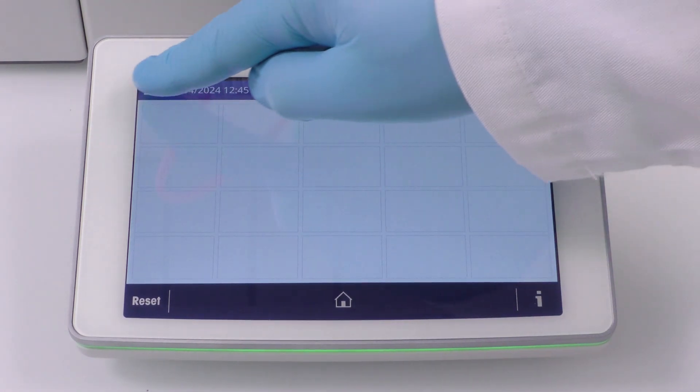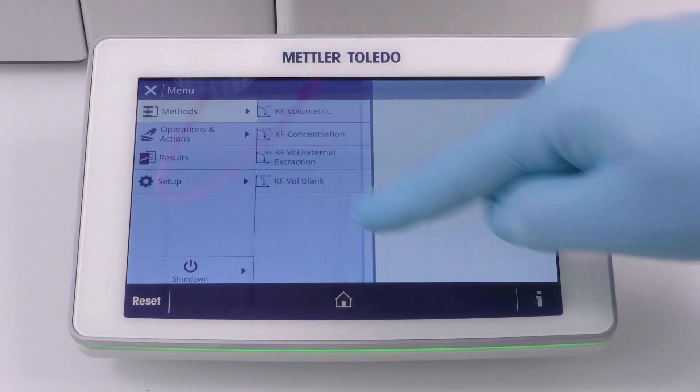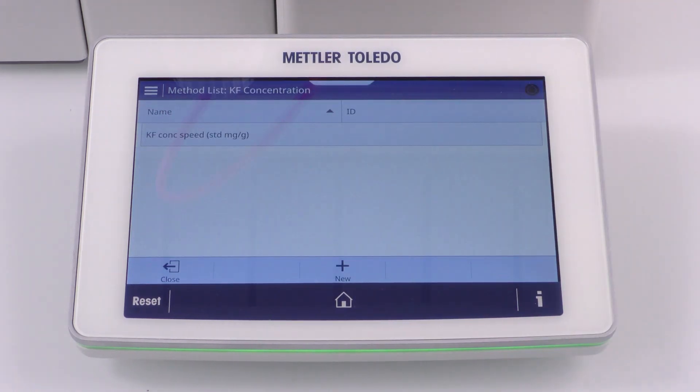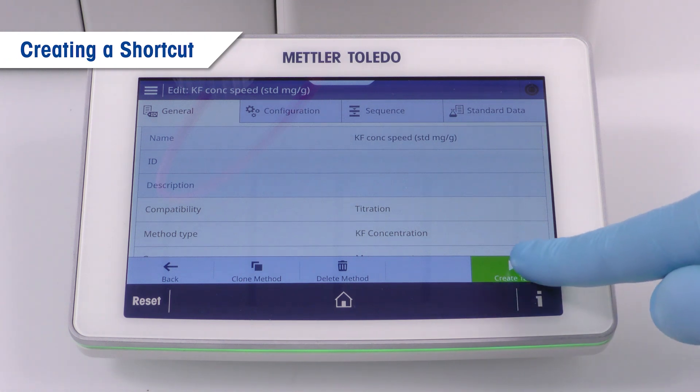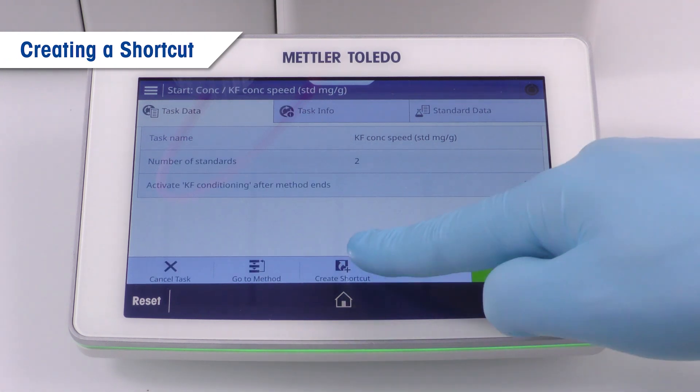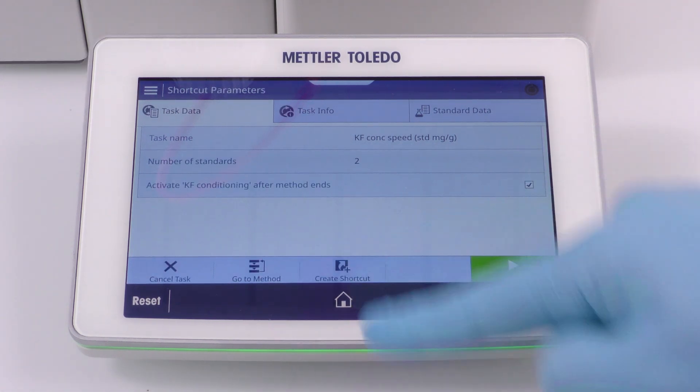It's good practice to adjust the concentration of the titrant daily. Thus, we want to give the operator direct access to this important method via a shortcut. In the method under create task, there is an option to create a shortcut for the home screen.